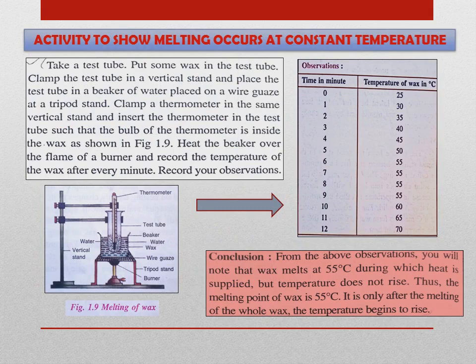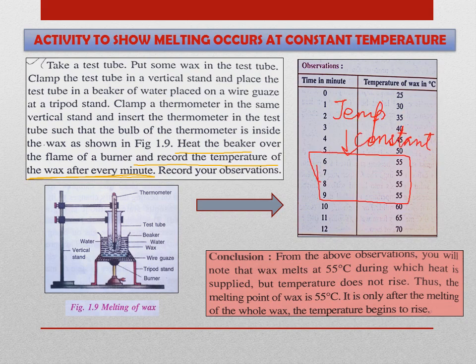Now we will see an activity to show that melting occurs at constant temperature. Take a test tube and put some wax in it. Arrange it as shown in figure 1.9. Heat the beaker and record the temperature of the wax every few minutes. You will observe that initially the temperature of the wax rises, but after some time the temperature becomes constant. Heat is supplied, but the temperature does not rise. This temperature is known as the melting point of wax. After all the wax has melted, the temperature again starts rising. So, from here we can see that melting occurs at constant temperature.